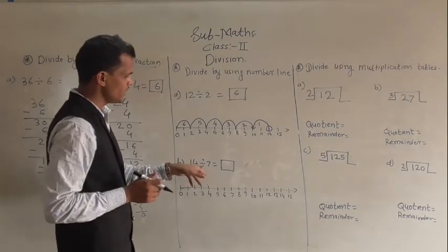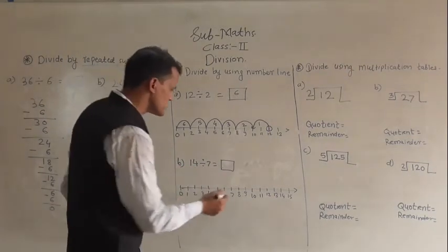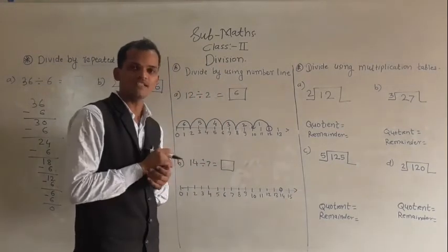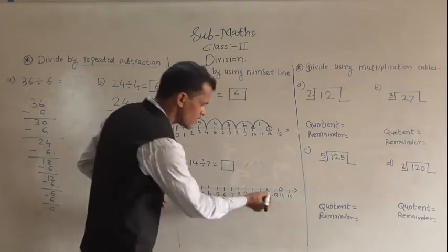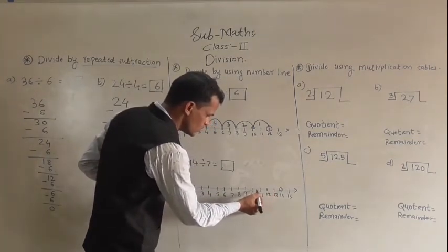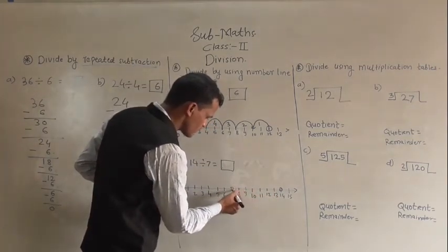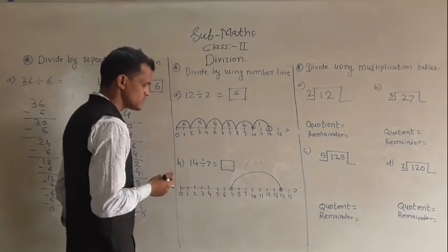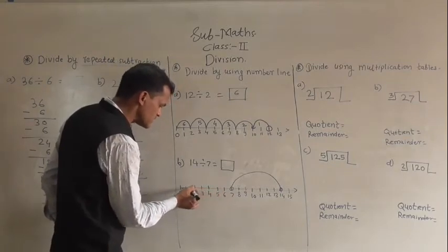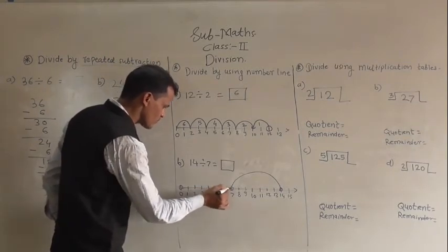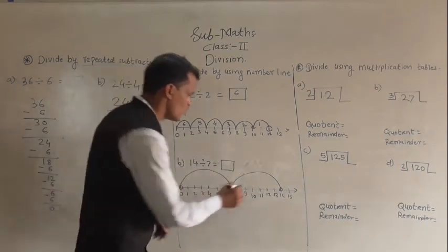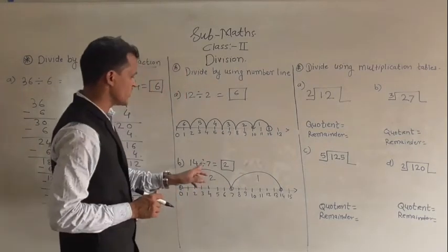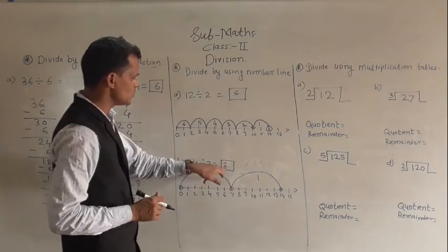Next: 14 divided by 7. Where is 14 on the number line? Every time you have to count 7 steps backward. So: 1, 2, 3, 4, 5, 6, 7 — that brings you from 14 to 7. Then again count 7 steps backward: 1, 2, 3, 4, 5, 6, 7. Count the jumps: 1 and 2. So 2 is our answer.